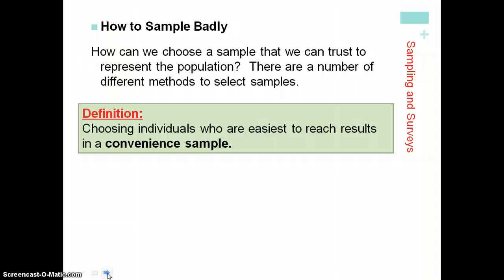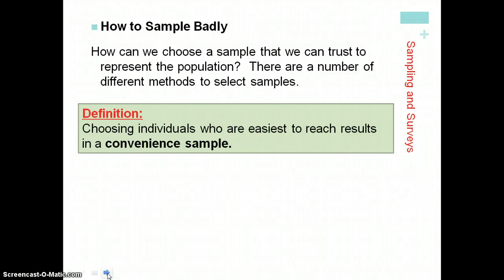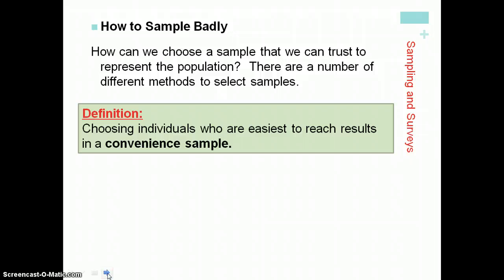A convenience sample is selected in such a way that it's convenient to you and the individuals being selected. For example, to determine what percentage of people favor President Obama's job performance, you could go to the promenade shops — because you're going to be there anyhow this weekend — and ask people walking around how they feel. That would be a convenient sample because you and the people happen to be there. However, that sample would be a bad sample because it's not representative of all people in the United States.